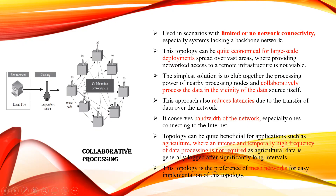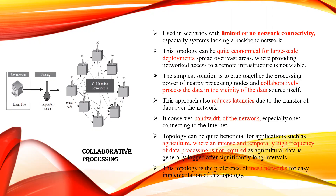Collaboratively, all the data can be sent and maintained in one database. Because of that, latency is reduced to a greater extent. When latency is reduced, network bandwidth is also reduced. This topology is beneficial for applications like agriculture and high-frequency data processing. When using a mesh network, implementation of the complete architecture becomes easy, and the cost, generation, and transmission of data can be managed efficiently.